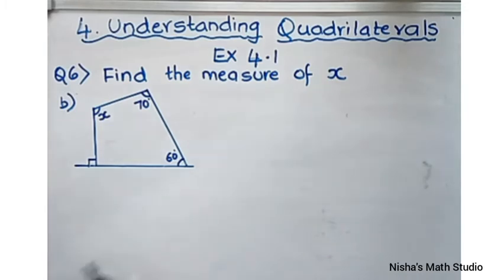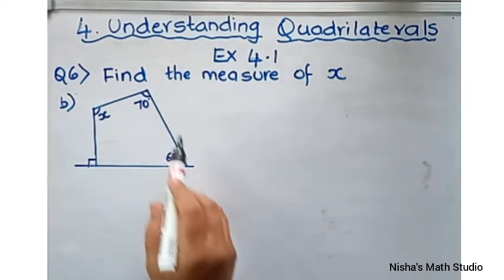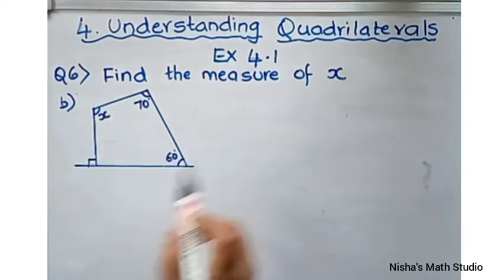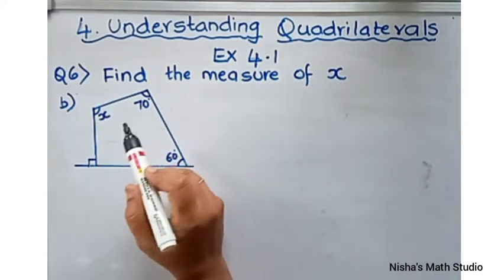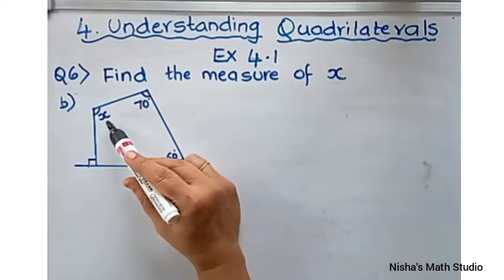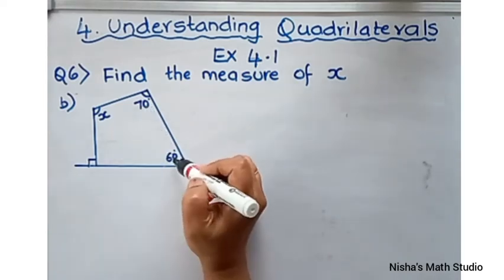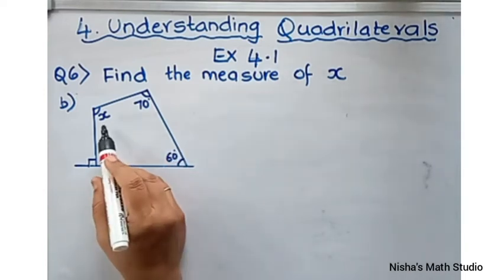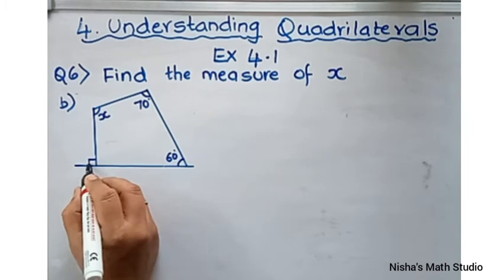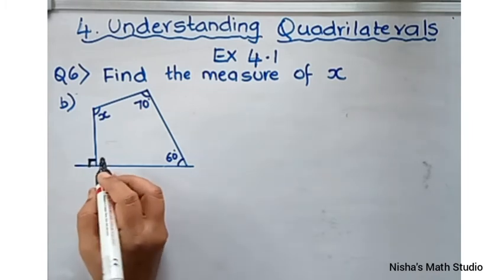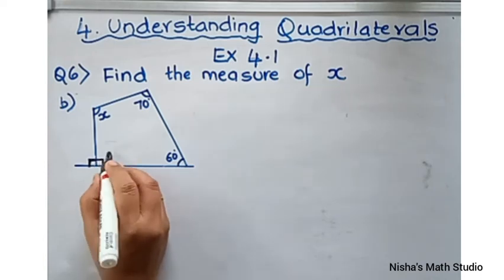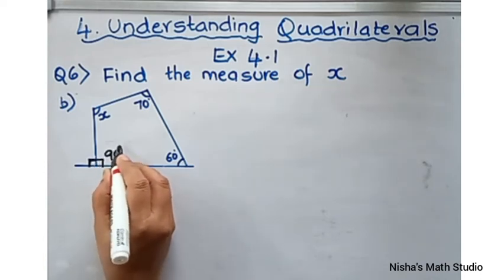Question number 6B. Again, if you observe, it is a quadrilateral because it has four sides. We are supposed to find x, but here only two angles are given — one is unknown, represented by x. This corner represents a right angle, 90 degrees. Since this is 90 degrees and these two form a linear pair, this interior angle is also 90 degrees.